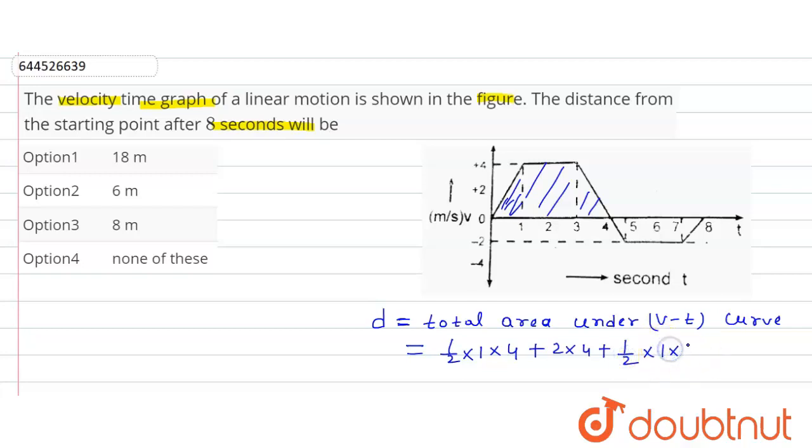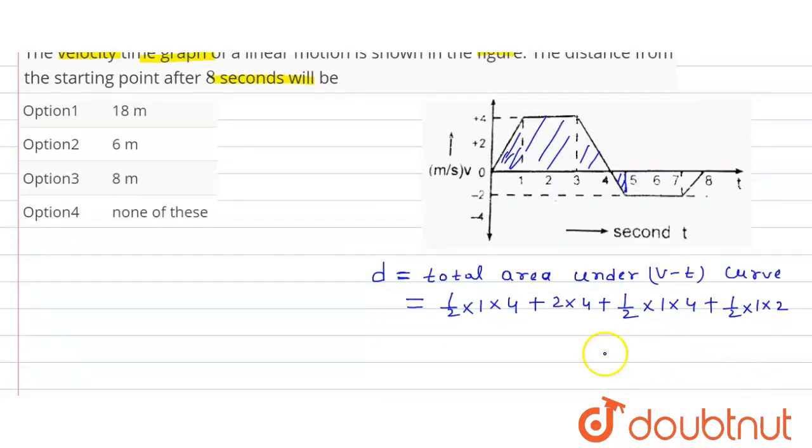Plus this triangle here, area will be how much? One by two, base is how much? Five minus four, one, into height is two. And for this here, this rectangle area will be how much? Seven minus five, two, into two. Plus for this triangle, this will be half into base is one into height two.